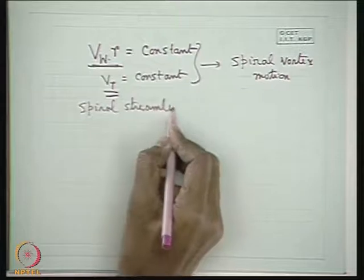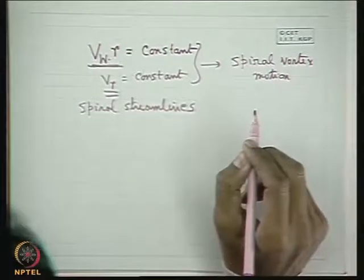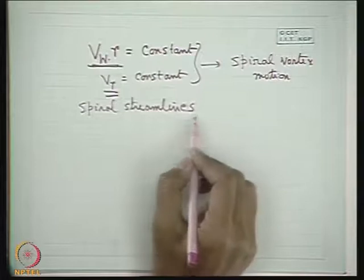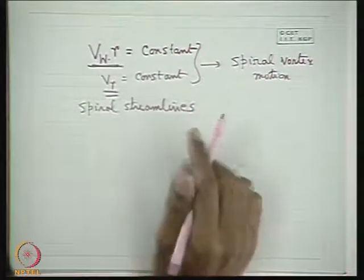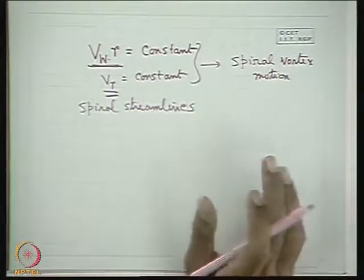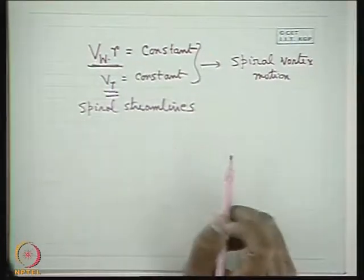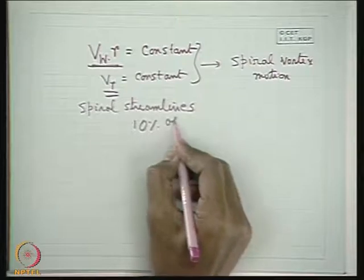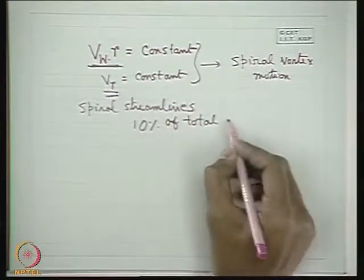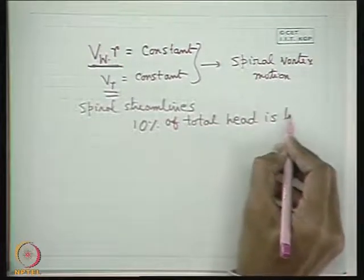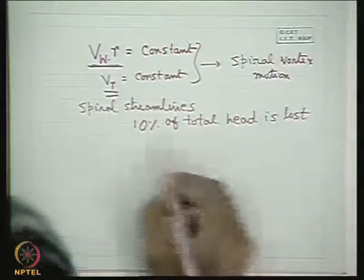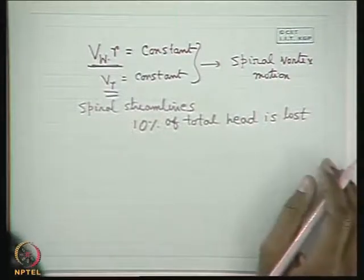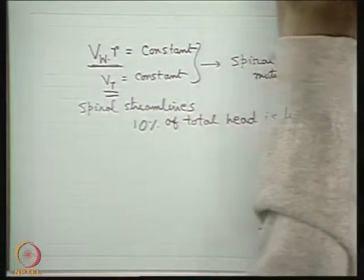The most important consideration is that the shape of the volute has to be made matching with the streamline pattern — that is, the volute must be made spiral to match the pattern of the spiral streamlines. This is one of the most important considerations in designing a diffuser. Usually, at maximum efficiency, 10 percent of the total head is lost in the diffuser due to frictional effects in converting kinetic energy into pressure energy.